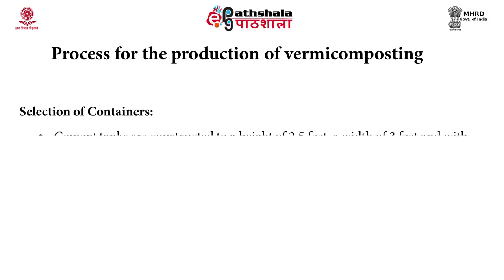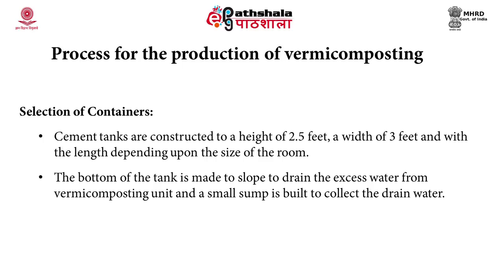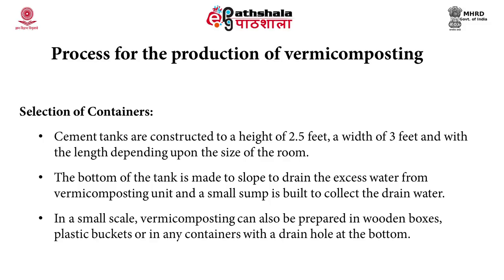Selection of containers: cement tanks are constructed to a height of 2 feet, a width of 3 feet, and with the length depending upon the size of the room. The bottom of the tank is sloped to drain excessive water, and a small sump is built to collect the drained water. This drained water collected from the vermi bed is called vermiwash, which is a very good liquid fertilizer that can be used for horticultural crops. On a small scale, vermicompost can also be prepared in wooden boxes, plastic buckets, or any container with a drain hole at the bottom.